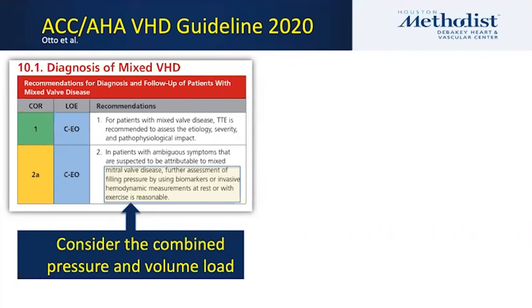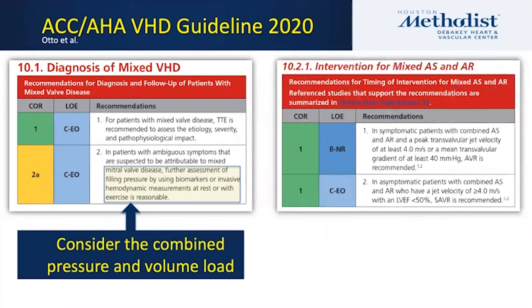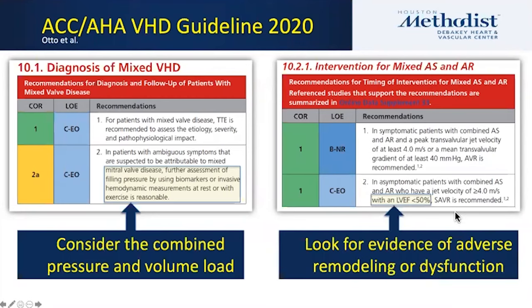The 2017 update to the guidelines offered no new information on mixed valve disorders. But thankfully, the 2020 rewrite did address this more formally — now we have three pages. There is a consensus that in patients with ambiguous symptoms attributable to mixed valve disorder, consider the combined pressure and volume load. Some things don't fall within predefined concepts of quantitation for a single disorder, which is why the guideline gets into invasive markers or biomarkers to help understand the ventricular or chamber challenges.